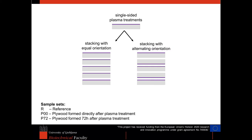In this case, the plasma treatments were single-sidedly performed and therefore two different kinds of stacks were created: one with equal and one with alternating orientations of the samples. Two sets of such stacks were created, one directly after the plasma treatments and one after a holding time of 72 hours.